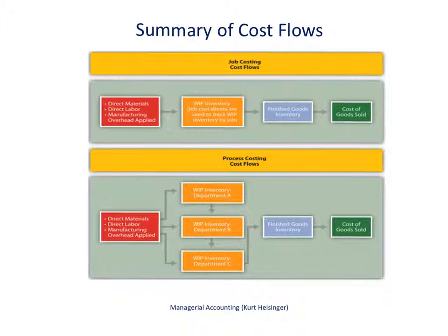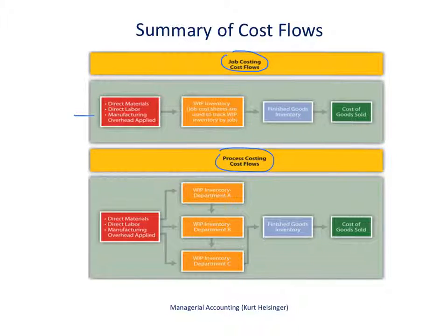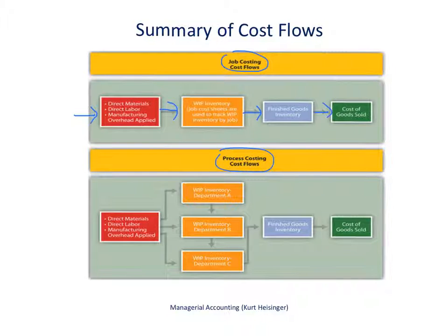Here's a summary of the cost flows for each type of costing method — job costing at the top and process costing at the bottom of this slide. With job costing, direct materials, direct labor, and manufacturing overhead all flow into one work in process inventory account. Job cost sheets are used to track cost information for separate jobs, but it is one work in process inventory account. As jobs are completed, those costs move into finished goods inventory, and ultimately when those goods are sold, the costs go into cost of goods sold.